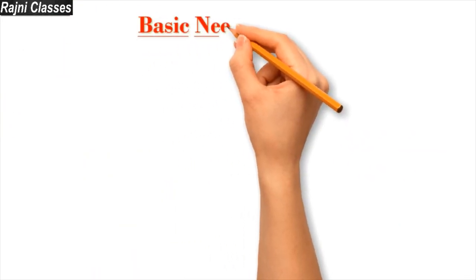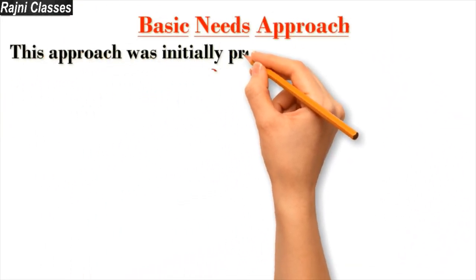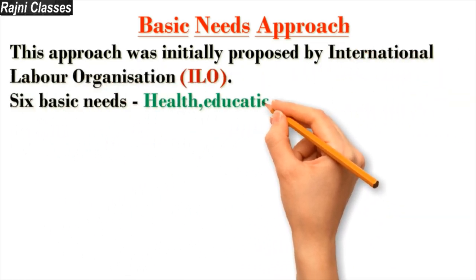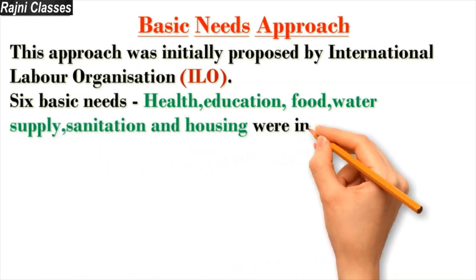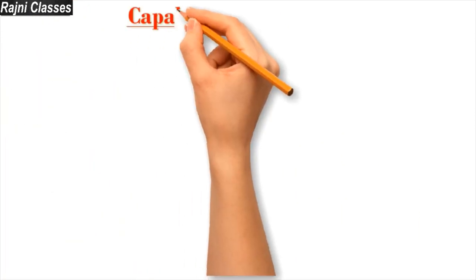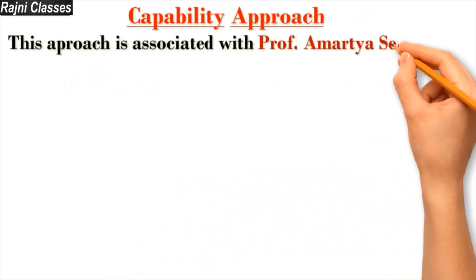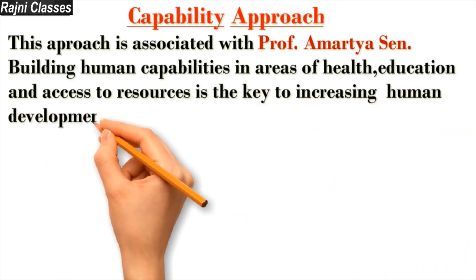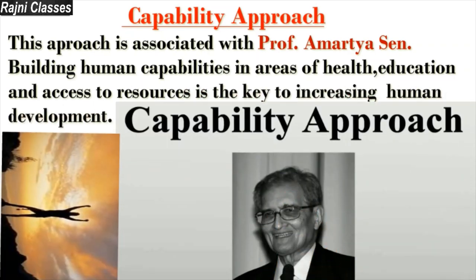The basic needs approach was introduced by the ILO, the International Labour Organization. It identifies six basic needs for human beings: health, education, food, water supply, sanitation, and housing. Under this approach, people's individual choices were somewhat ignored in favor of fulfilling basic needs. The capability approach is associated with Prof. Amartya Sen, who argued that health, education, and access to resources play an important role in building human capabilities and human development.